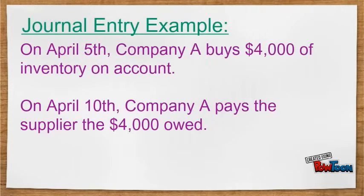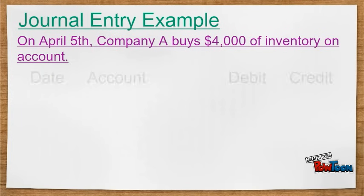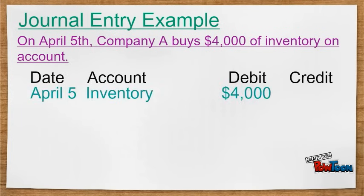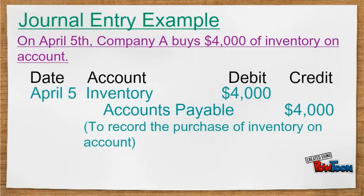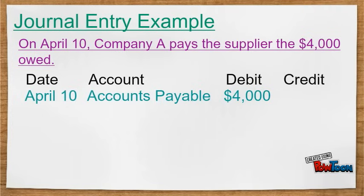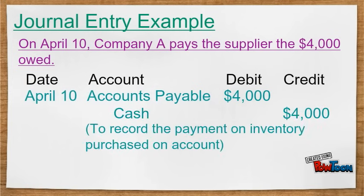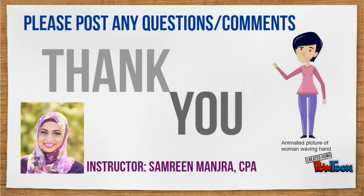Here is another example. On April 5th, Company A buys $4,000 of inventory on account, and on April 10th, the company pays the suppliers the $4,000 owed. We start the journal entry by recording the April 5th transaction date. We debit the inventory account because there is a $4,000 increase in assets and credit the accounts payable liability account because we owe money to the supplier. If the supplier is paid on April 10th, we would debit accounts payable since we decrease our liability and credit cash.